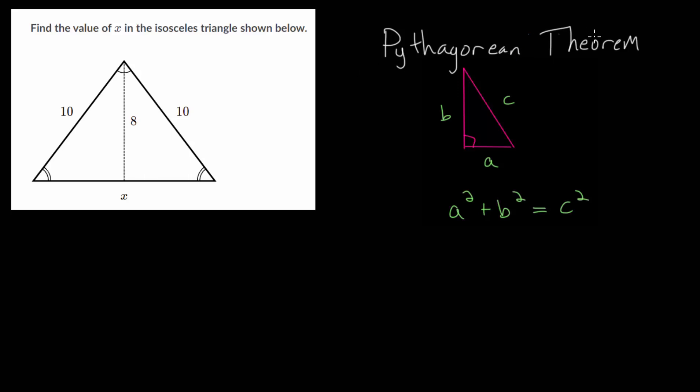Remember, the Pythagorean theorem relates the side lengths in a right triangle where a and b are the legs. You square them and add them together, and they're equal to c squared, where c is the hypotenuse. It's the side opposite the right angle and the longest side in the triangle.